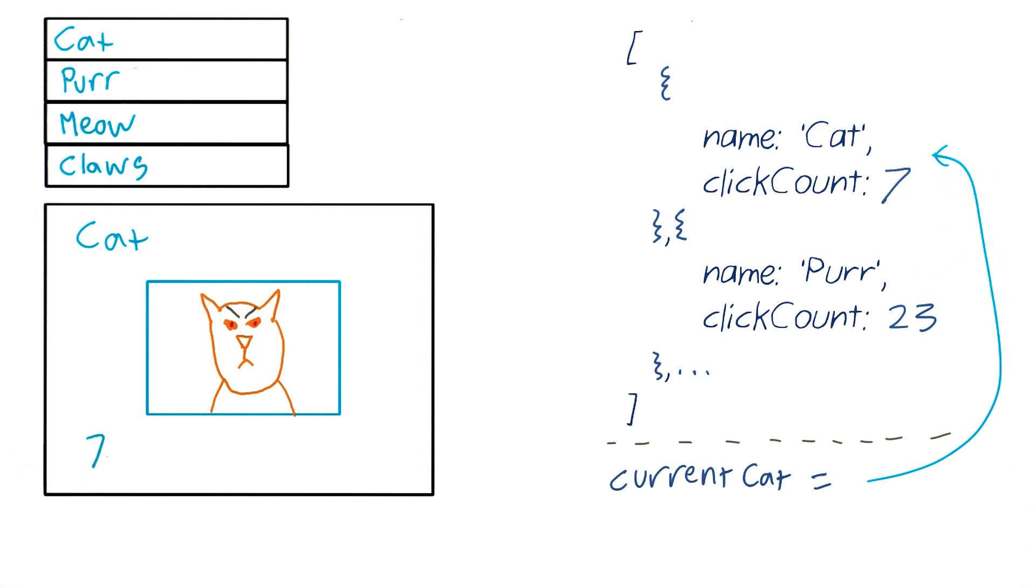Now if a user clicks on a cat up here, let's say on this second one here, then the octopus does the following things. First, it changes the model. The current cat is now being set to Purr. And then it tells the view over here to re-render itself.